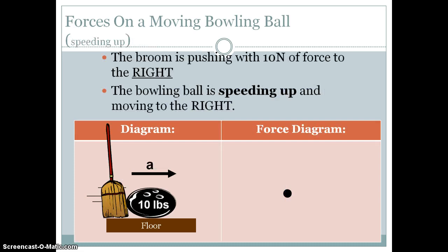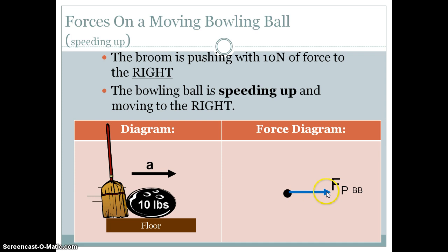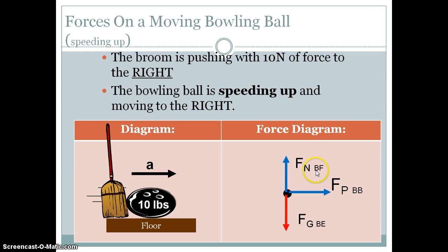Let's look at the situation where the bowling ball is moving to the right and speeding up. The broom is pushing with a 10-newton force to the right. The force diagram includes: F sub P — the force of push on the bowling ball by the broom — at 10 newtons to the right, the force of gravity on the ball by the earth pointing down, and the normal force on the ball by the floor pointing up.